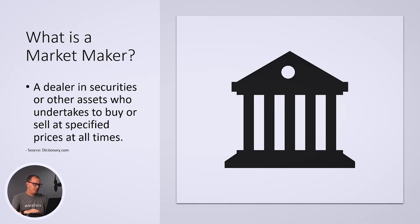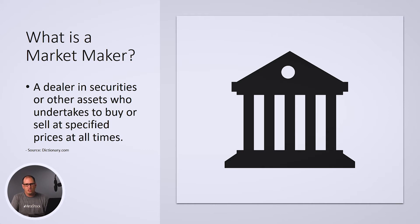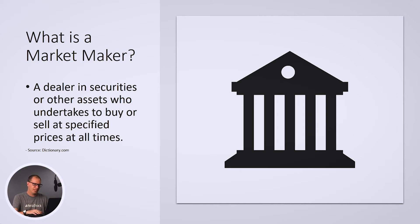Let's first of all talk about a market maker. A market maker is a very interesting concept. It's basically a dealer in securities or other assets who undertakes to buy or sell securities at specific prices. That's what we're all doing, but a market maker has a lot more liquidity. He can actually put in a lot more liquidity into the market and give a broader range of prices, and we'll understand that as we look more at the level 2 view.